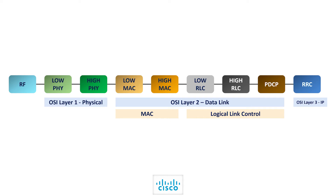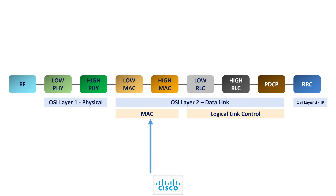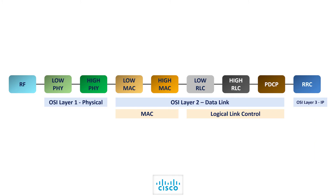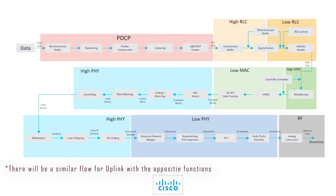Now, a lot of us who do not come from the RAN transport background understand RAN elements better when we compare the architecture with the OSI model. Layer 1 starts after RF, as RF is essentially the analog/digital conversion of electromagnetic signals. The low PHY and high PHY fall into layer 1. Beyond that we have the data link layer or layer 2, divided into the MAC layer comprising low MAC and high MAC, and the logical link control layer comprising low RLC, high RLC and PDCP. Beyond that it is all IP, which means RRC falls in layer 3.